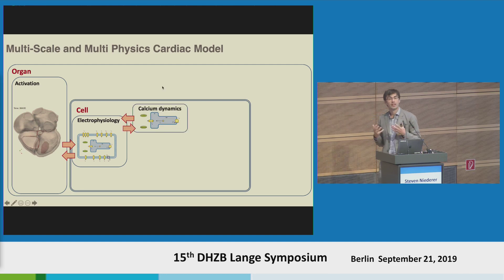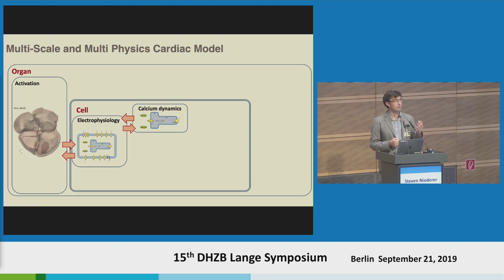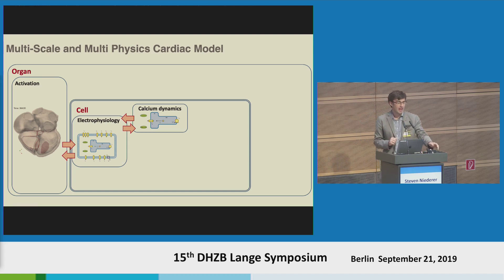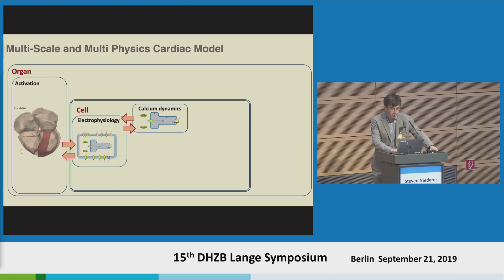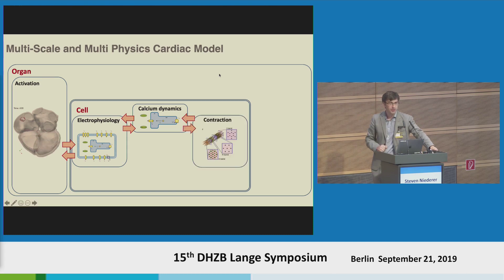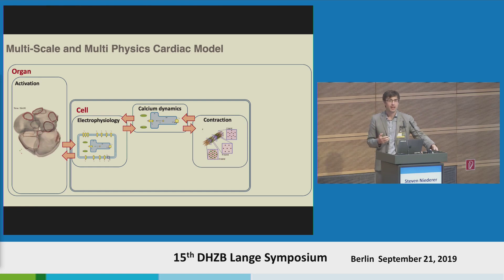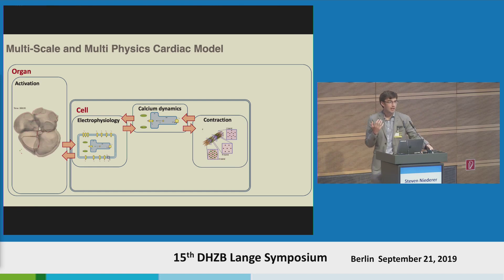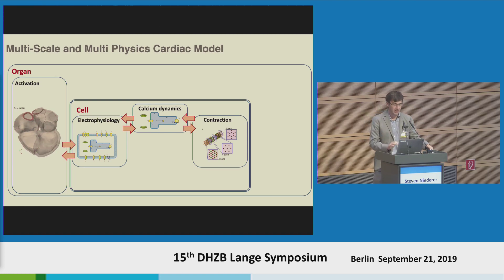We can go one further and link down from these ion channels through to the calcium dynamics, where we can capture the dynamics of ionic receptors or SERCA, characterising how calcium is moving in and out of the sarcoplasmic reticulum. And then how that links through to the sarcomere, capturing the dynamics of troponin, tropomyosin, the actin filaments and the myosin filaments to generate tension within the sarcomeres.